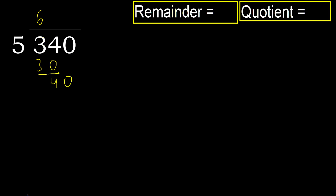Bring down to get 40. 5 multiplied by 9 is greater, so multiply by 8 instead. 40 is not greater.